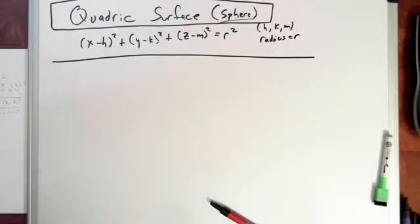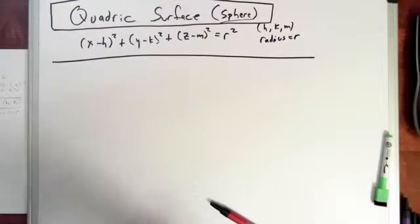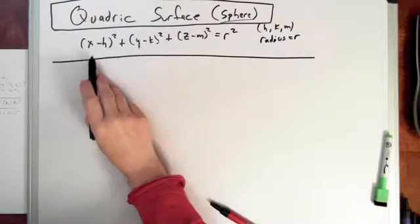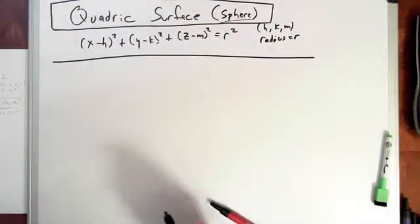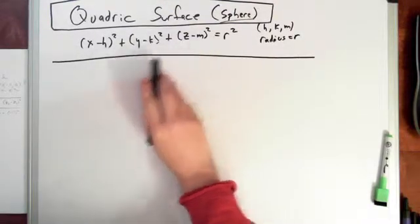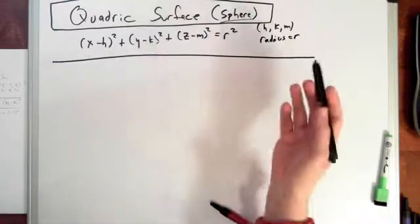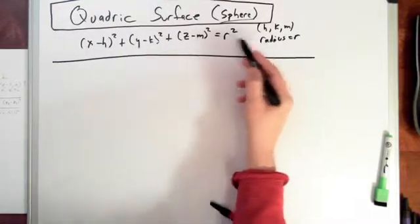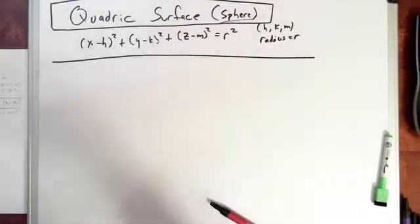Continuing on with quadric surfaces of a sphere. From the previous lesson we learned that the standard form of the equation is what you can see right here. We went through the graphing exercises and learned how to identify the x, y, and z, or in this case h, k, and m, the coordinates of the center of the sphere, as well as the radius, taking the square root to get the radius r.